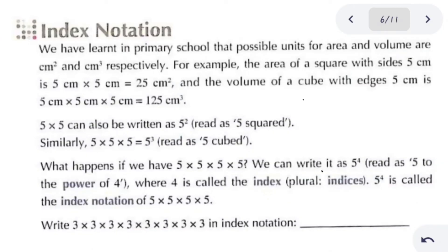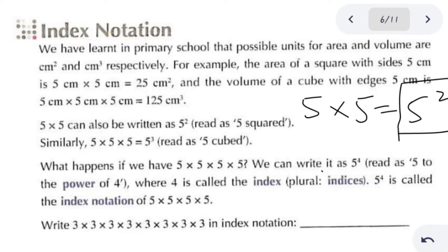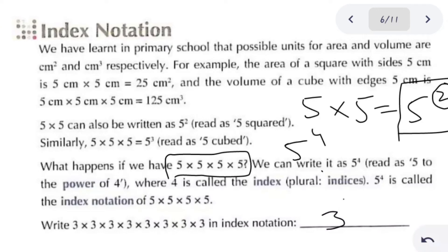Now we are going to learn about index notation. Index notation is a way of writing a number in power form. For example, 5 × 5 can be written as 5 to the power 2. The repeated number is the base, and the number of times it repeats becomes the index. So if 5 is repeated 4 times, it is written as 5 to the power 4.